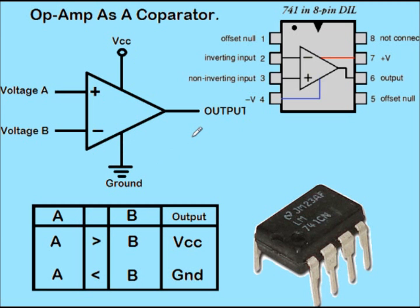If you don't want the output to be ground and instead want the output to be 2 volts, 3 volts, or any other voltage such as minus 15, minus 5, or minus 9 volts, you should give a positive supply here and a negative supply here. So if A is less than B, the output voltage will be the negative voltage which you have supplied.